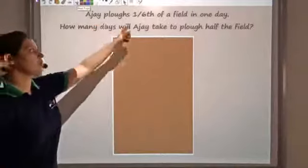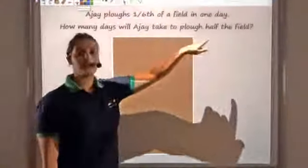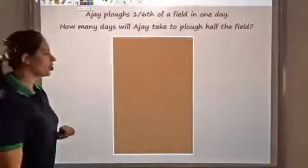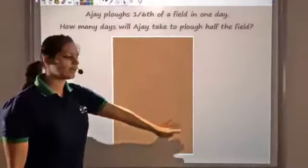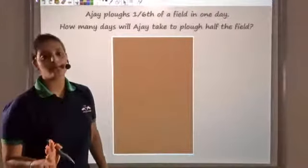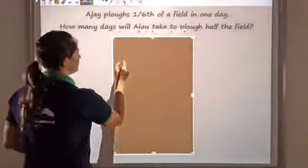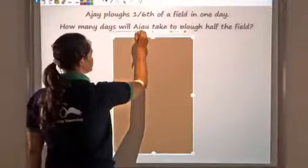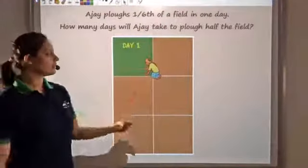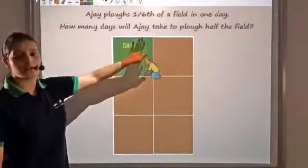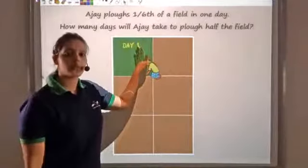Let's say that Ajay plows one sixth of a field in one day. How many days will he take to plow half the field? Ajay plows one sixth of the field — if I divide this field into six equal parts, he will do one of those equal parts. So this is his one day work: one of these six equal parts.